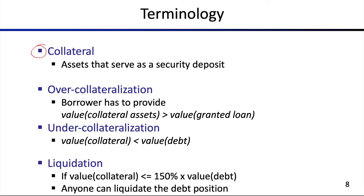Collateral is a security deposit. It's an asset that the borrower provides in order to secure its debt. So the more debt you take on, the more collateral you need to provide, because the collateral is a security deposit that guarantees that you can pay back your debt. You cannot take on too much debt, otherwise you would be indebted, so there needs to be some kind of a security deposit.